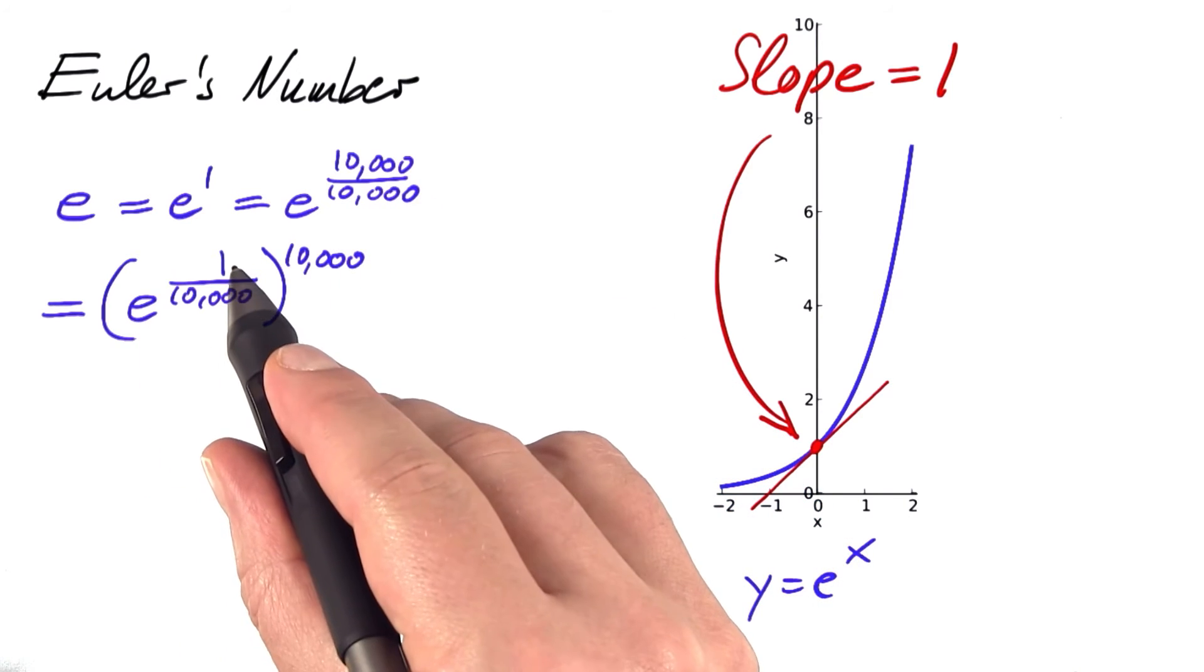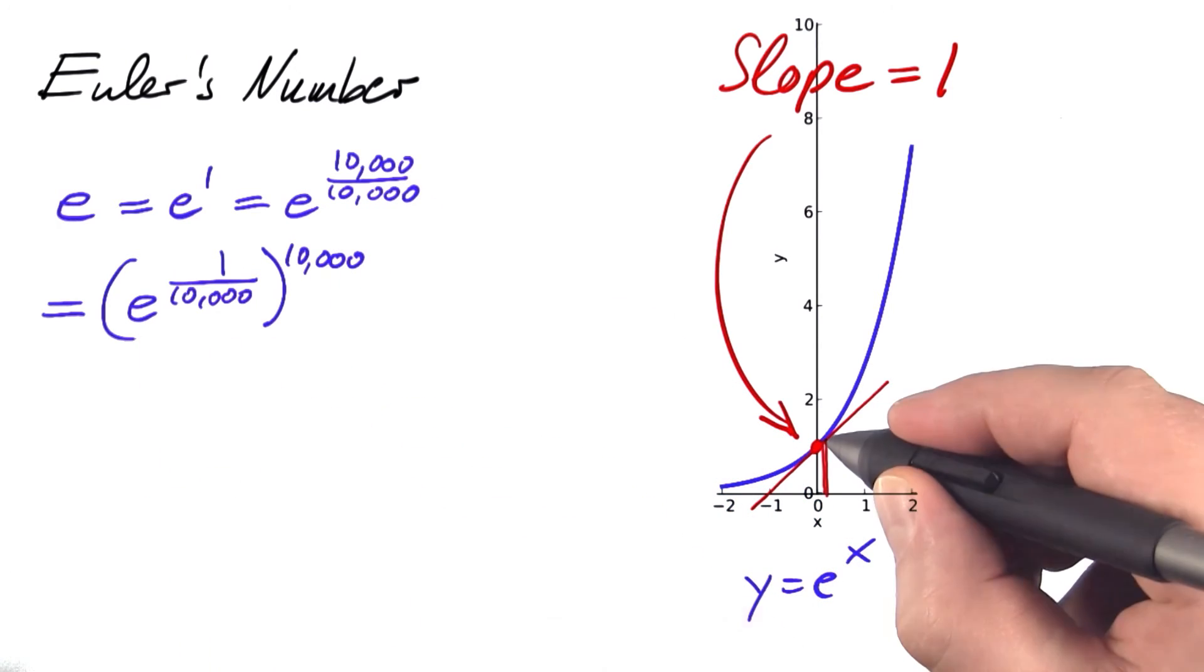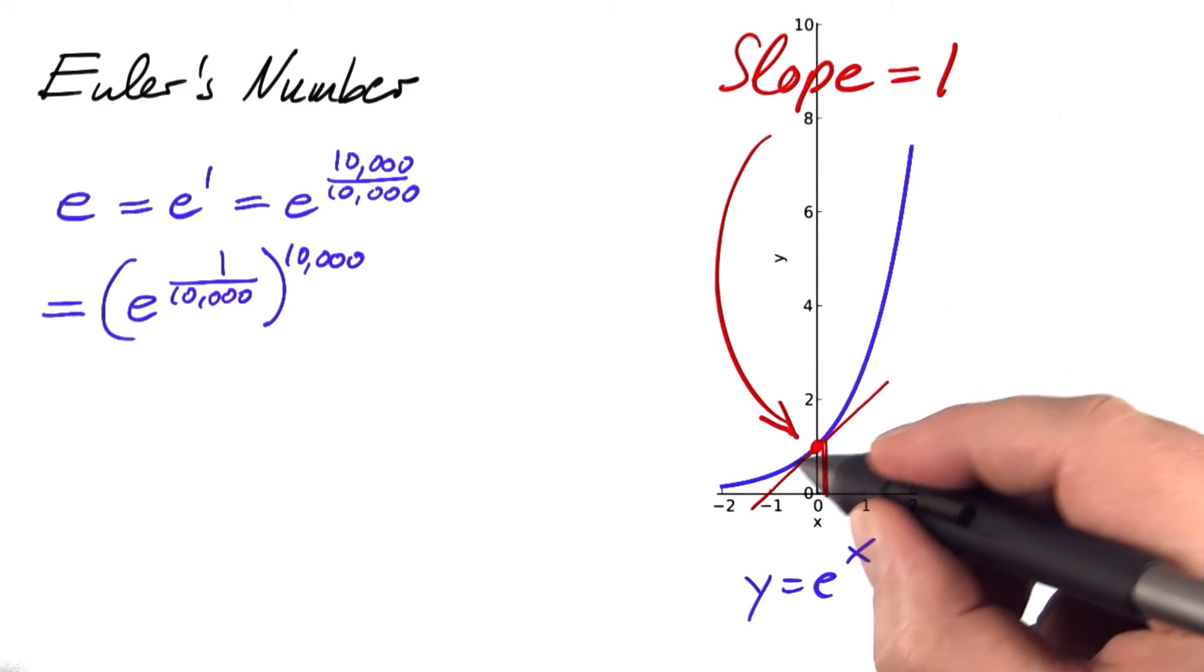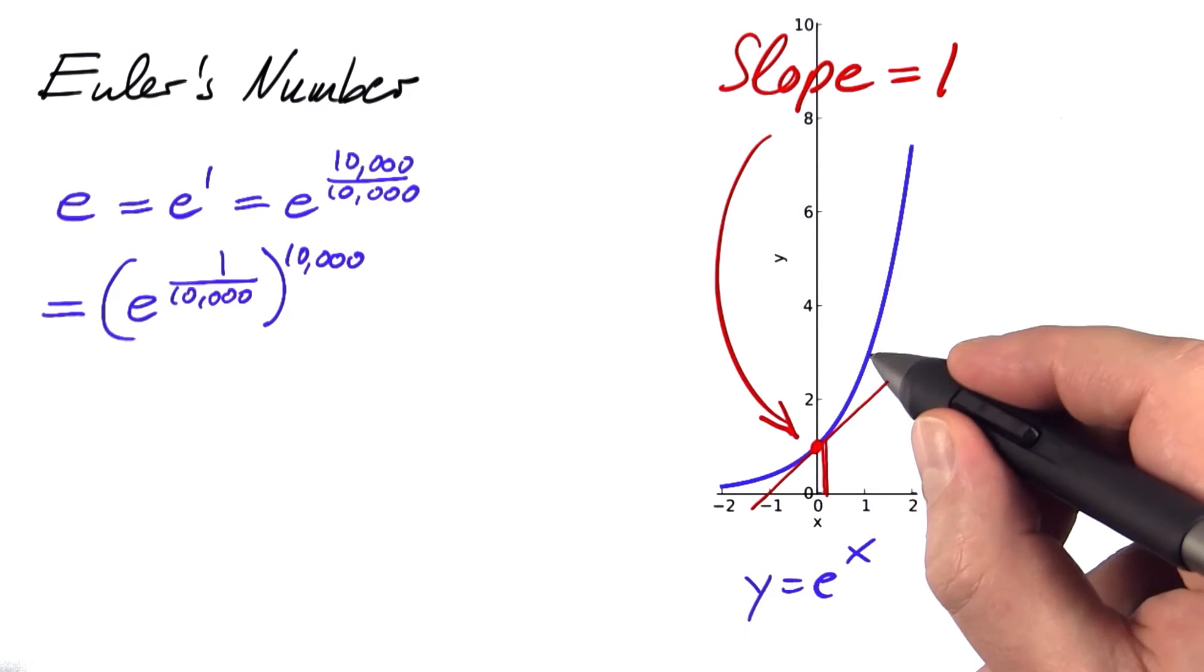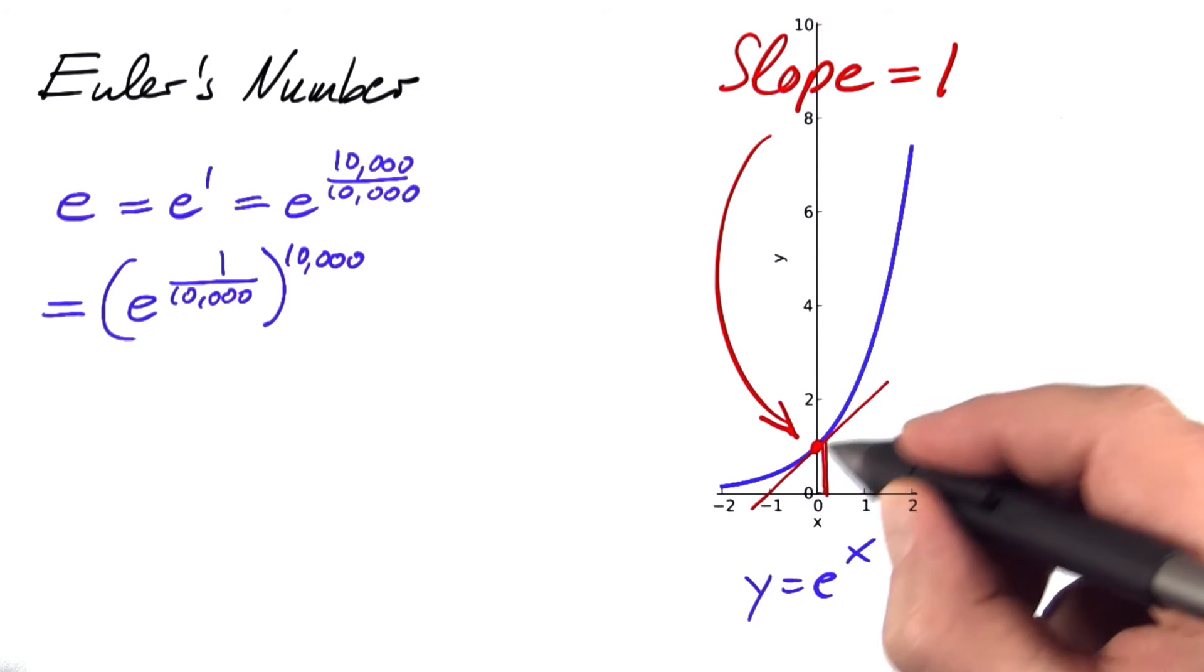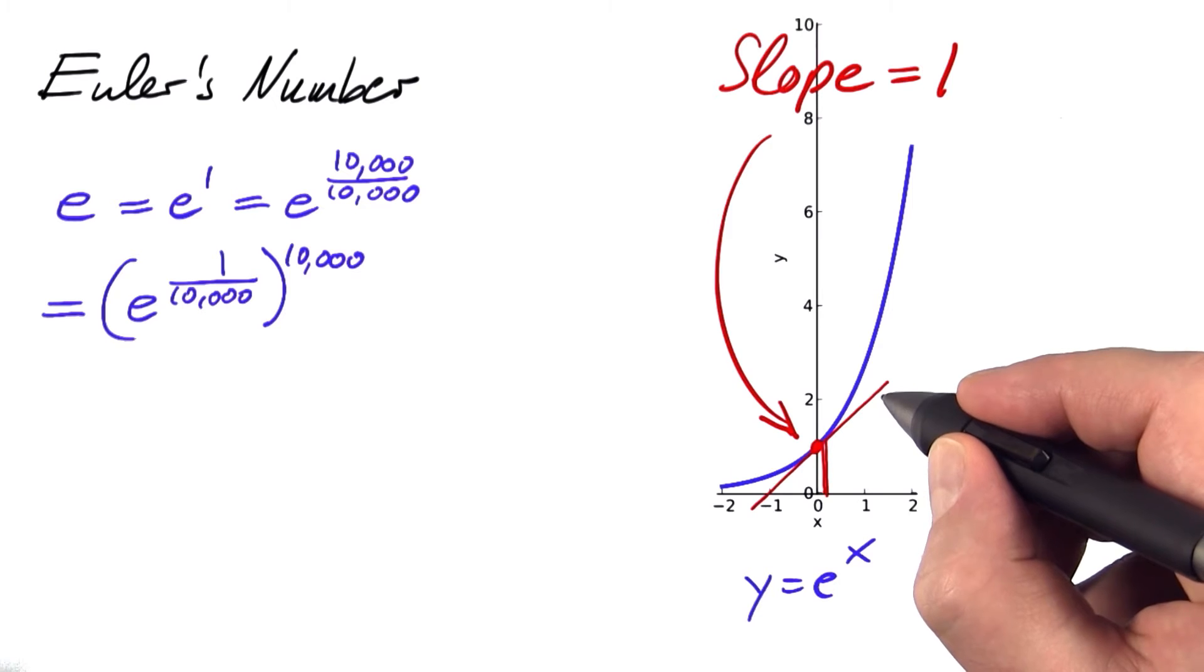But e to the power of 1 over 10,000, that's something pretty close to x equals 0 on this blue curve. So rather than looking up the value on that blue curve, I'm using the red line, the tangent line, to compute that value, to approximate that value.